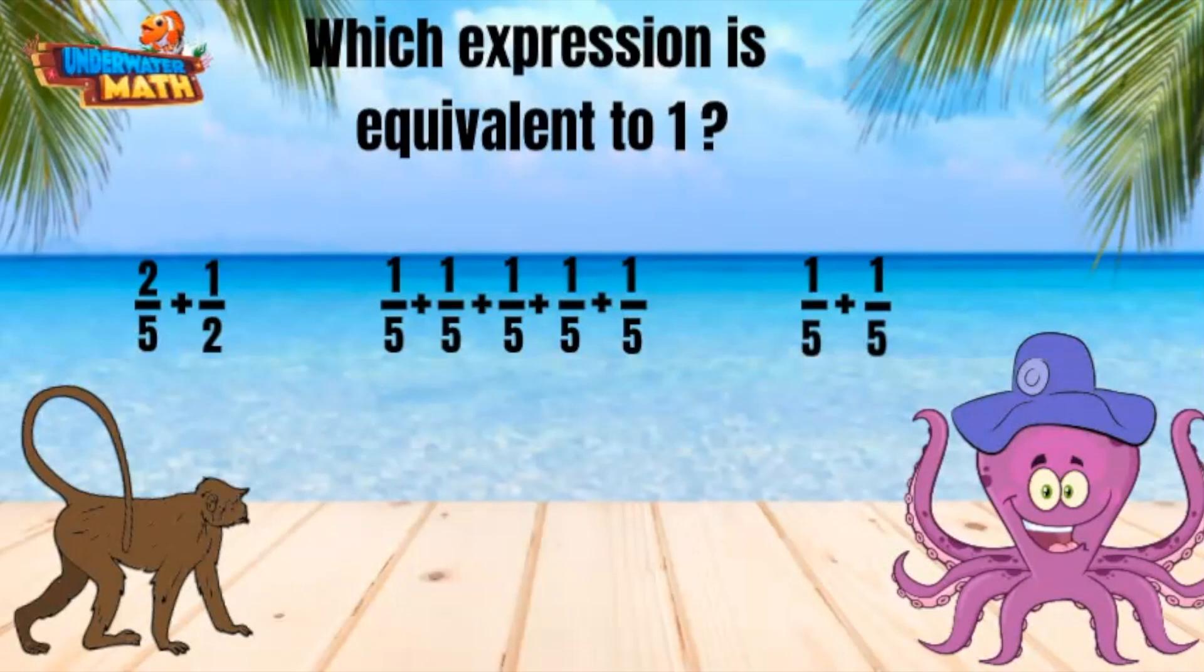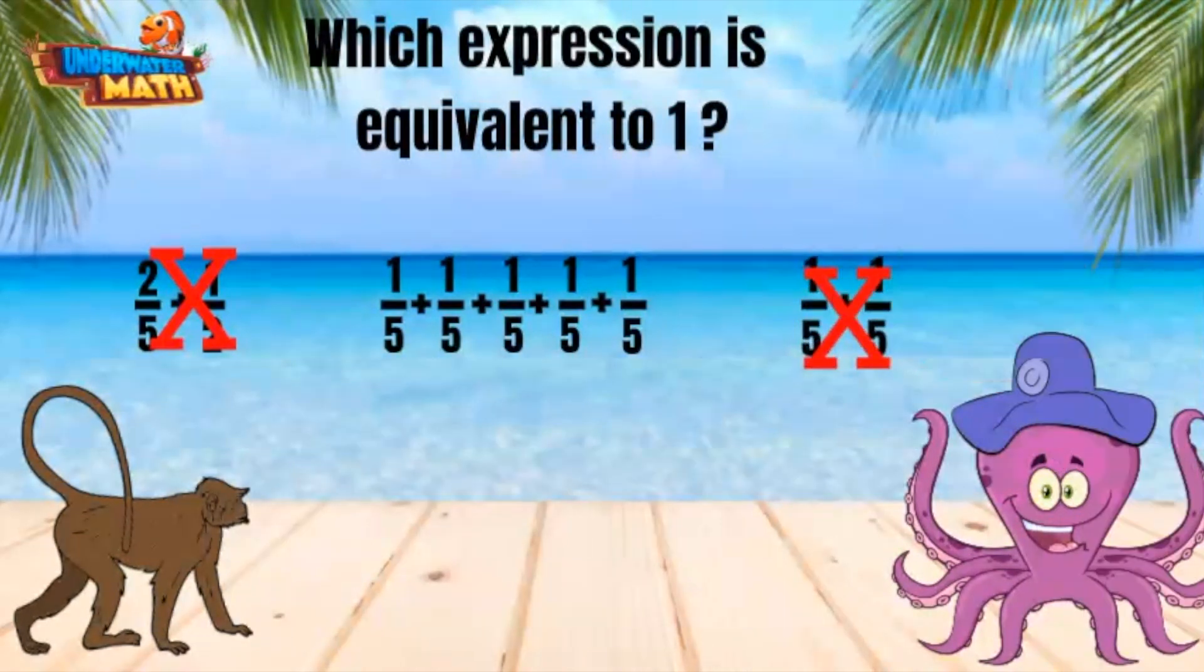We cannot add two-fifths and one-half because they do not have a common denominator. Look at the last option. We are adding two unit fractions of one-fifth, which equals two-fifths, not one.